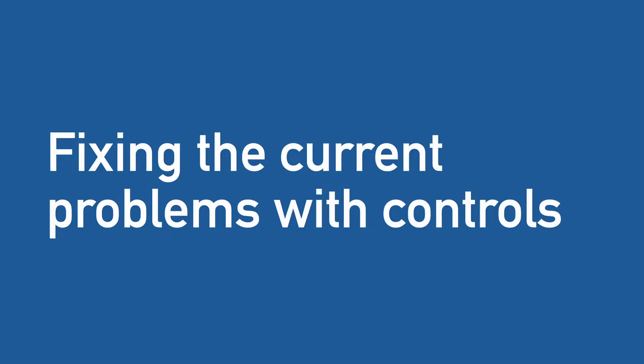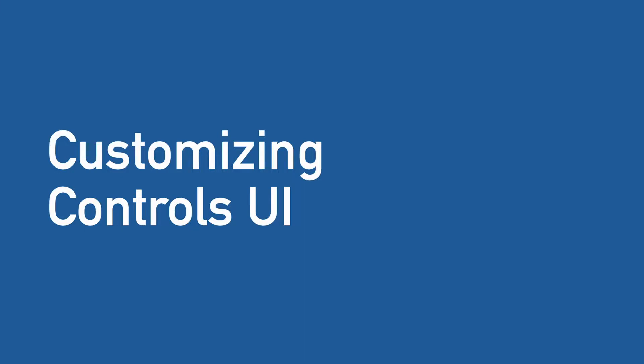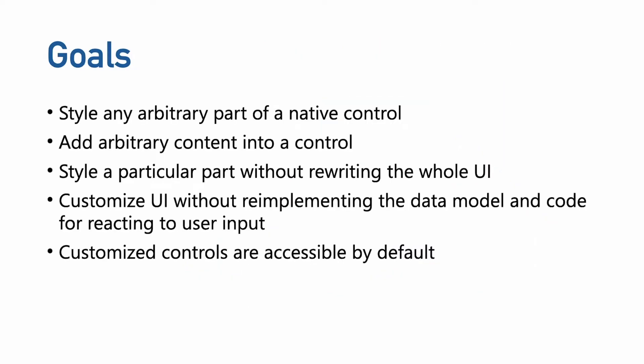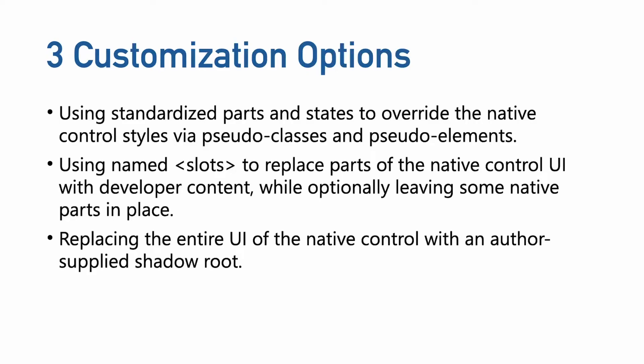Now let's talk about what I'm most excited about: fixing the current problems with controls and styling them. Last year in August 2020, an explainer with proposed solutions for enabling customization of controls was released by the Edge, Chrome, and OpenUI teams. The proposal for form controls uses the MVC design pattern, where the form control is made up of three distinct parts: a model, a view, and a controller. The goals revolve around enabling as much customization as possible while reducing the overhead for the developer. We're proposing three different solutions that offer a range of flexibility and customization depending on what the developer wants to do.